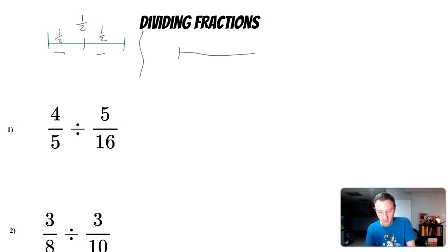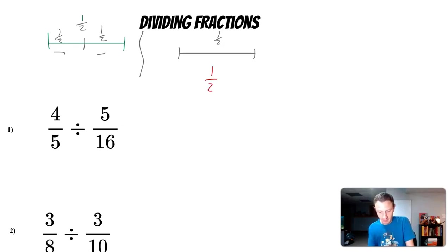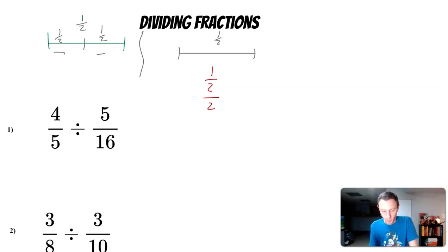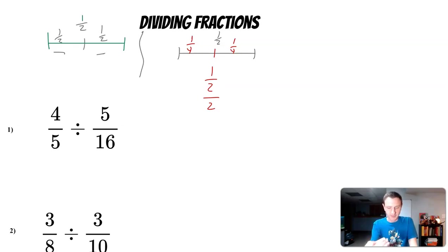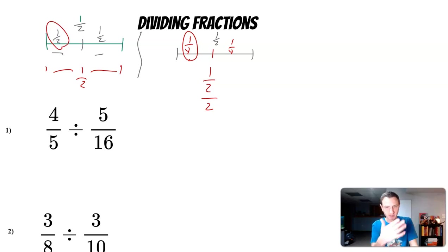Now let's apply that to fractions. If I have a line segment that's one half unit long and I want to divide that by two — so one half divided by two — if I cut that segment in half, each segment is a fourth. So cutting a half in half gives one half divided by two equals one fourth.